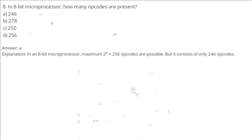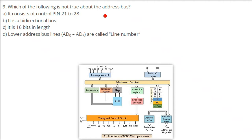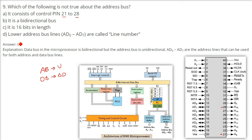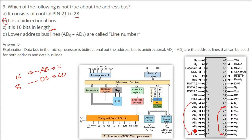Which of the following is not true about the address bus? The second option — that it is a bi-directional bus — is absolutely wrong, because the address bus is unidirectional. The data bus is bi-directional. The address bus is 16-bit in length from AD0 to AD15. The lower address bus lines AD0 to AD7 can be used for both the address bus and data bus together; the ALE (Address Latch Enable) signal tells which is being used. The answer is D.